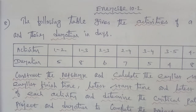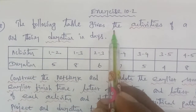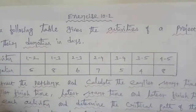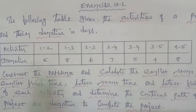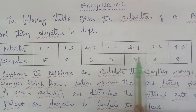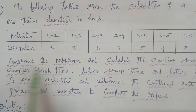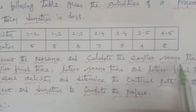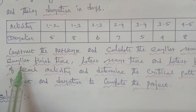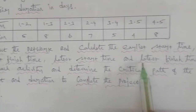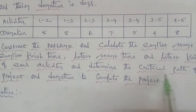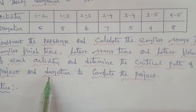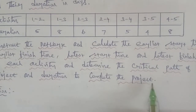Hi students. Business Snacks Access 10.2, question number eight. The following table gives the activity of a project and the duration in days. The question asks us to consider the network and calculate the earliest start time and earliest finish time, latest start time and latest finish time of each activity, and determine the critical path of the project and the duration to complete the project.